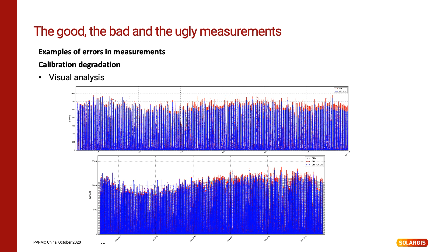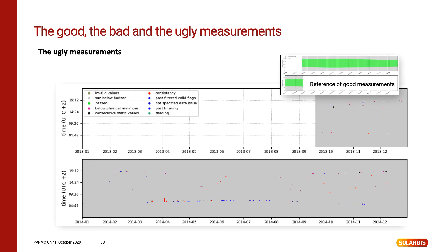In this case there were two types of instruments: the first was a thermopile pyranometer and the second was a silicon pyranometer. The silicon one is slowly degrading over time, shown by the blue chart, so there is an increased difference between the two sensors. This picture also illustrates the importance of regular calibration even if the sensor degrades over time. With proper calibration it will never exceed the uncertainty guaranteed by the manufacturer. The last picture shows a completely bad measurement campaign where no usable data was recorded in a campaign lasting more than 15 months. The small green profile in the top right is a reference of good measurements, showing what we would expect to see.